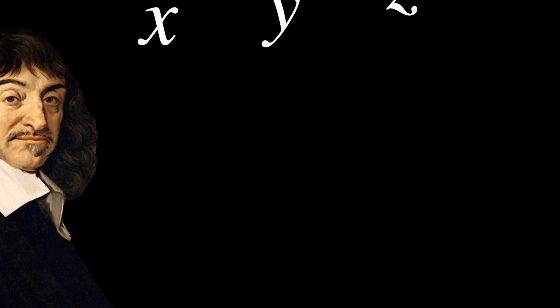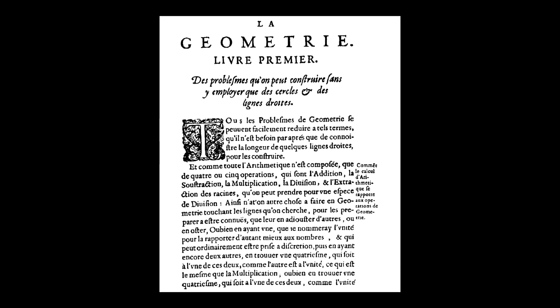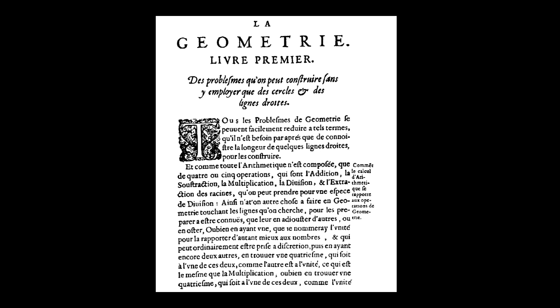His notational system was directly adopted and refined by René Descartes, who introduced the modern notation of using X, Y, and Z for unknowns and letters A, B, and C for known coefficients. René Descartes' major contribution was the development of analytical geometry, a bridge between algebra and geometry, which he introduced in his work La Géométrie in 1637.